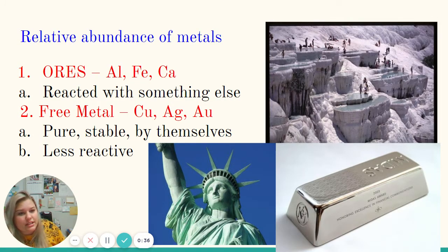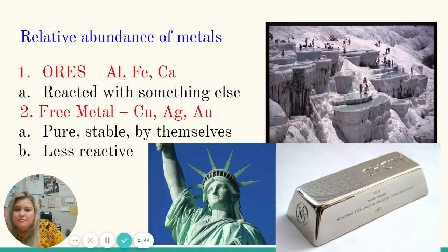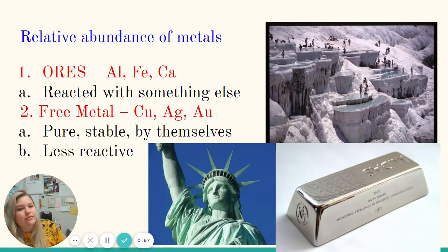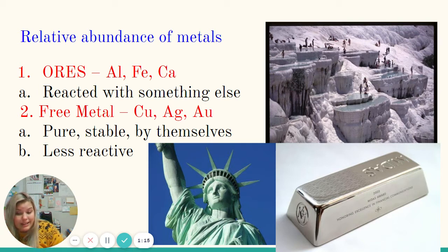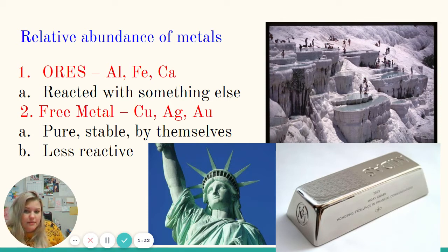Metals occur naturally in two ways: either as an ore, meaning they're in a compound, or as a free metal. Less active metals are the ones that usually appear in their free state — those are ones you can typically make coins or jewelry out of, like silver, gold, platinum, and copper. More active metals usually appear in compounds — alkaline metals always appear in compounds. Transition metals are middle-of-the-road; some like iron or aluminum will react given time, making them more active than stable ones like gold or silver.